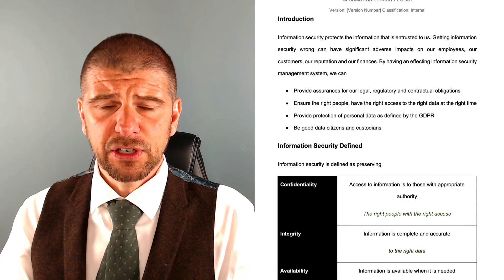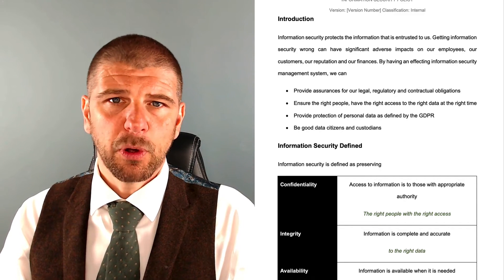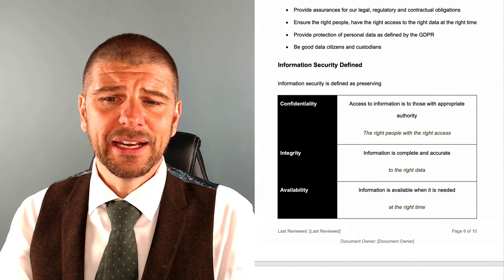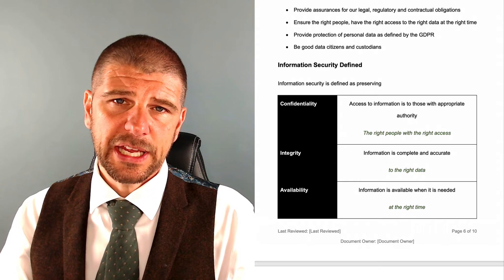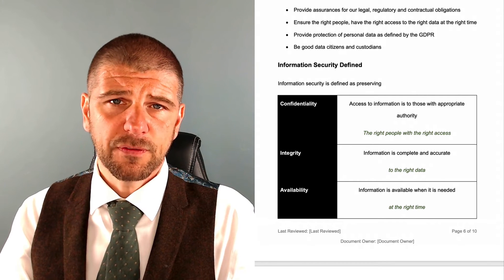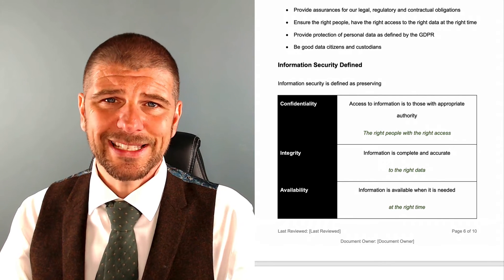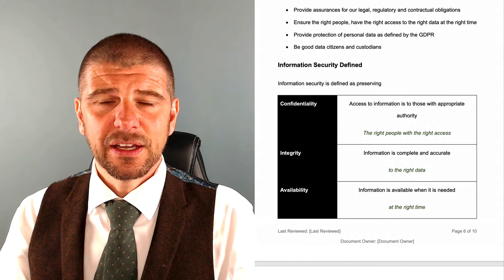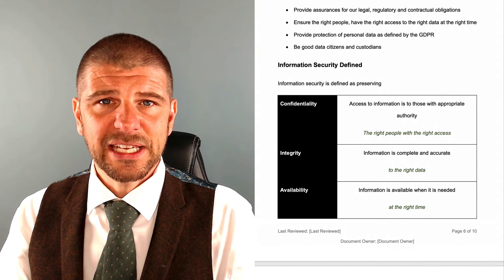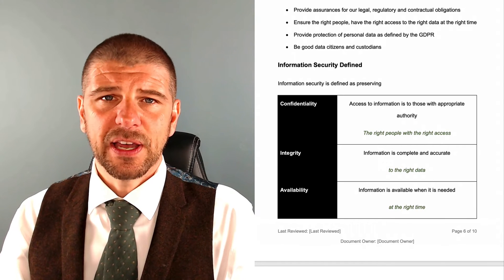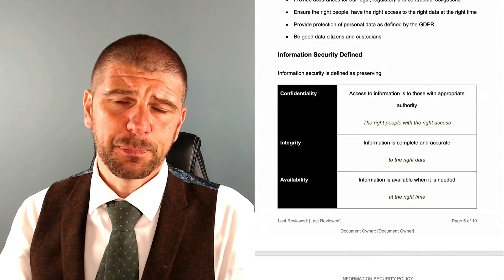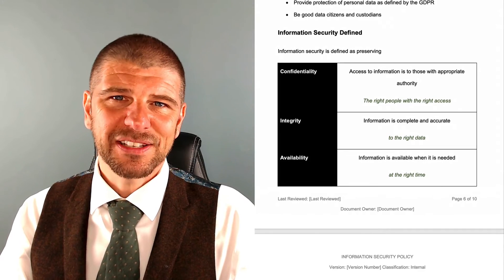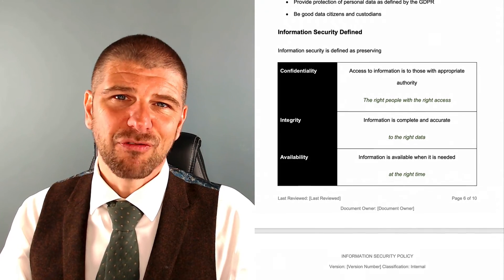Then we have our high-level introduction that talks about what the policy is going to cover, and we define what information security is. You're going to see the three tenets of confidentiality, integrity, and availability of data come up time and time again, often referred to as CIA or the CIA triad. This defines what they are — I like to use layman's terms, so it's about giving the right people the right access to the right data at the right time.